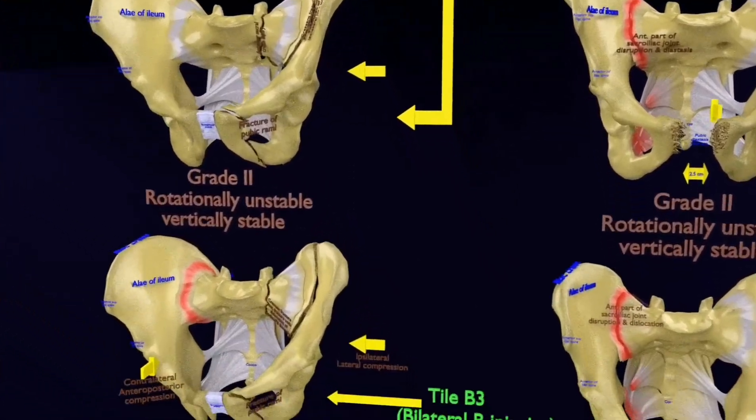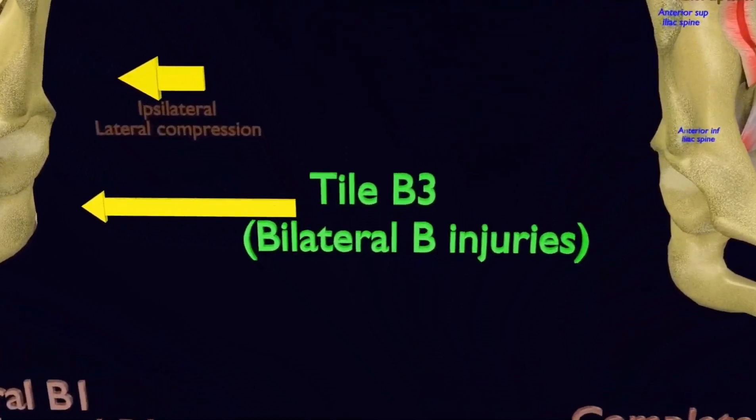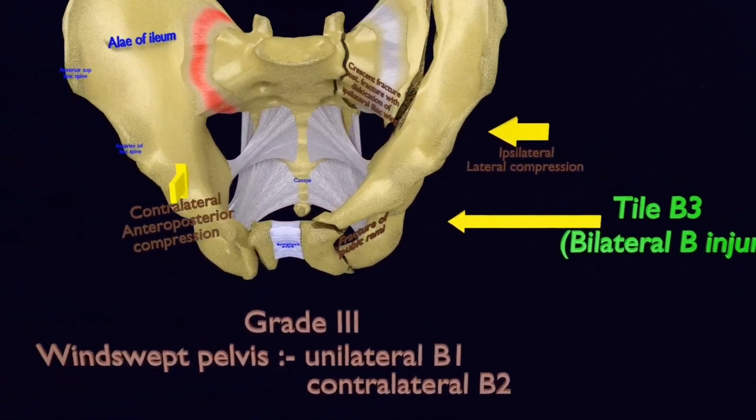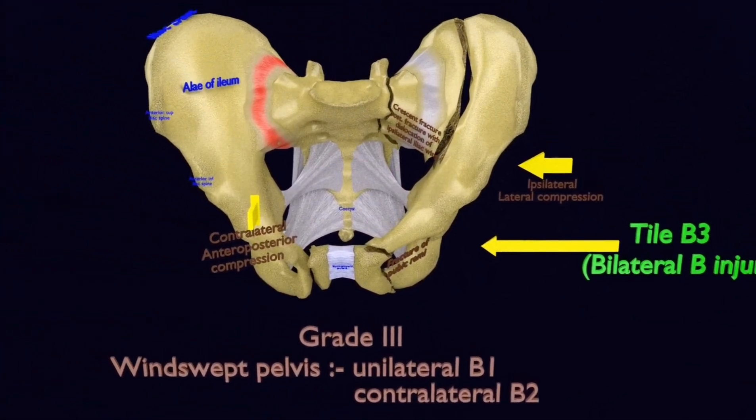Now, we come to the grade 3, lateral compression of Young and Burgess classification. It is the same as type B3 of Tile classification.